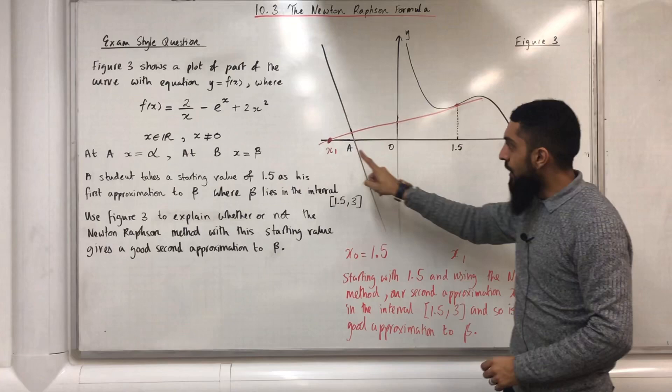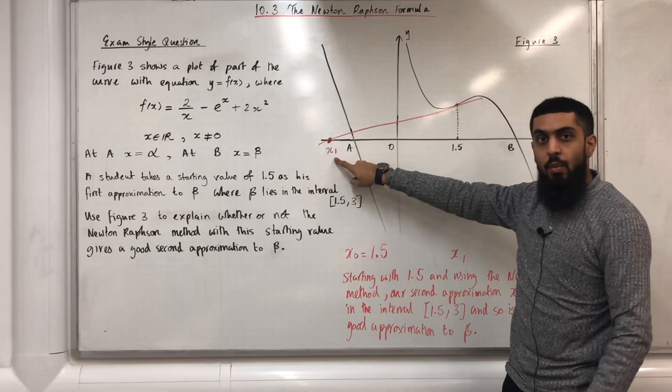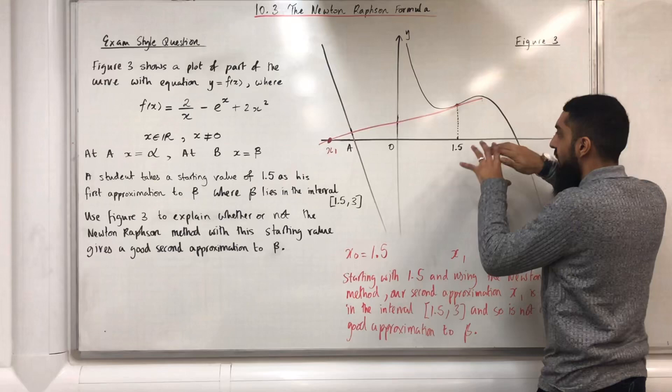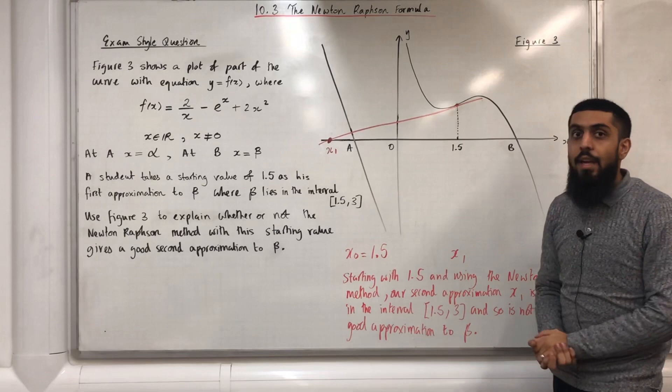The x-intercept of this tangent is x1, which is the second approximation to beta. Now, I can see that x1 is not in the interval [1.5, 3]. So, using x0 equals 1.5 as our starting value and the Newton-Raphson method, we do not get a good second approximation to beta.